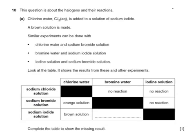Here's an exam question about displacement reactions. Chlorine is added to sodium iodide, and there are various other combinations. You need to complete the table to show the missing result. We've got bromine with sodium iodide. Would we expect bromine to displace iodine from sodium iodide? Yes, because bromine is more reactive than iodine. So we'd expect to get a brown solution, which is the indication of making iodine in the aqueous solution.